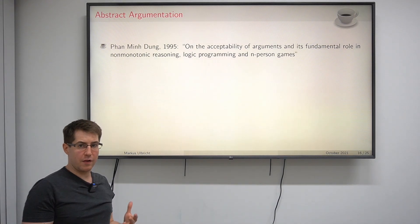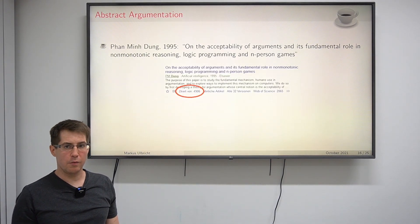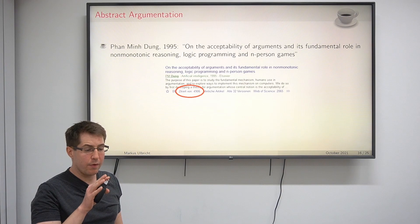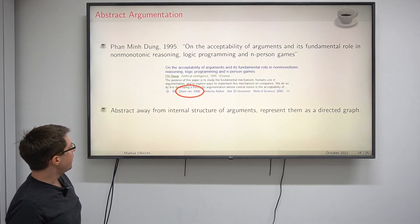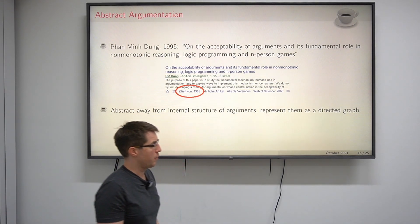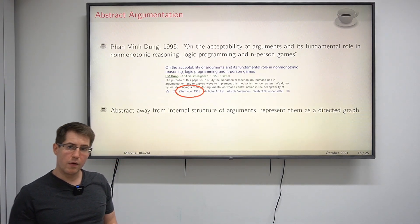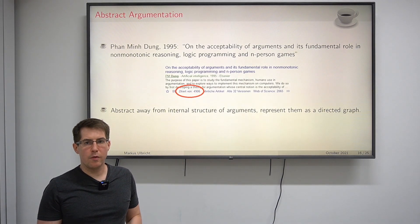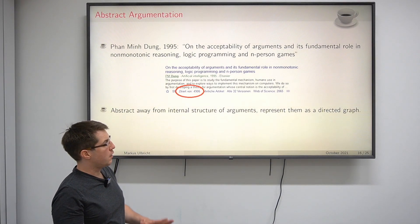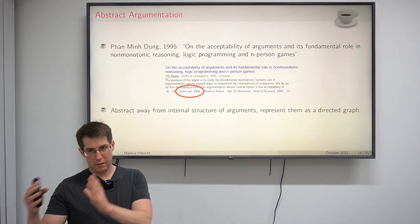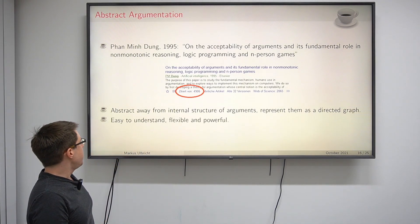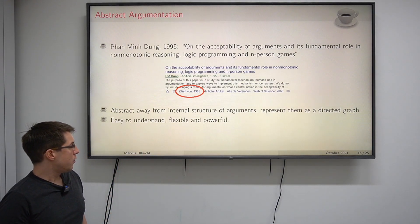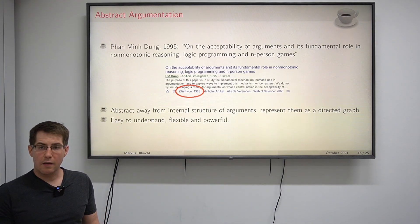You can tell how much attention Dung's paper received just by looking at the citation count, which as of recording this video is almost 5000 — for a knowledge representation paper, this is really a lot. What Dung did was abstracting away from the internal structure of arguments and just representing them as a directed graph. He did not try to think about why certain arguments attack each other; he just said here is an argument, here is an attack, and that is all we care about. This is why abstract argumentation frameworks are easy to understand, flexible, powerful, and hence very popular.